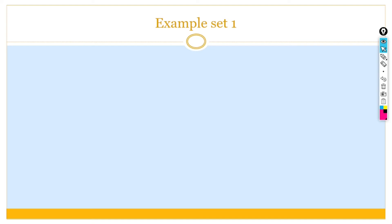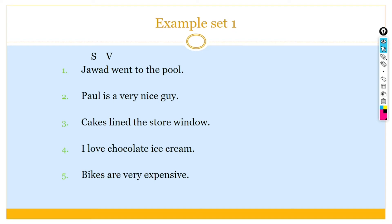Now, I would like to share a few examples with you. So, in first sentence, you can see subject word. Jawad went to pool. Pool is very, here, Jawad is a subject, went is a verb. Pool is very nice. So, pool is a subject and is a verb. Cake lines the store window. Cake is the subject and line is the verb.